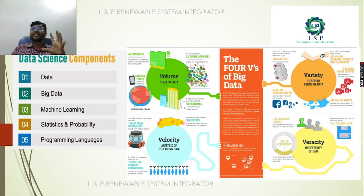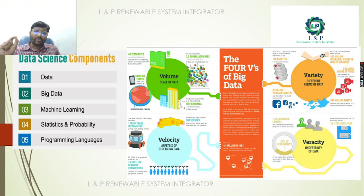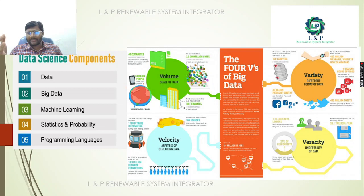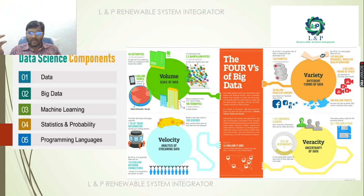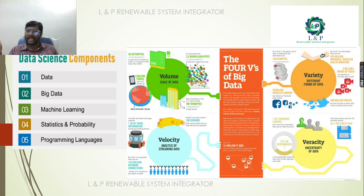The most important components of data science are: data, big data, machine learning, statistics and probability, and programming languages. For big data, there are four important V's. The first is Volume — the scale of data; for example, six million people is a big volume, or 100 terabytes, or 40 zettabytes. The second is Variety — there are different forms of data, such as from Facebook, YouTube videos, or wearable gadgets like smartwatches.